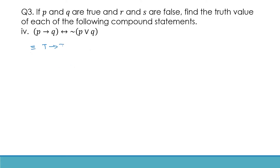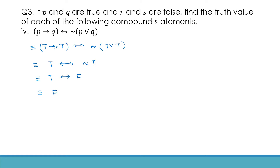Let's do the next one. We get: true implies true, double implication, not of true or true. True implies true is true. Not of true or true: true or true is true, and not true is false. So we have true double implication false, which is equivalent to false.